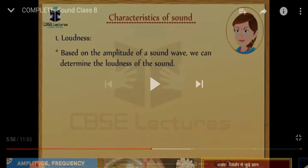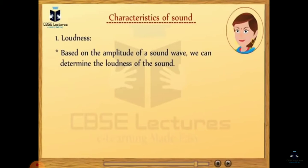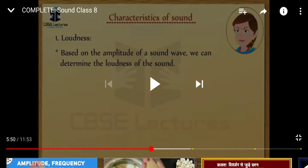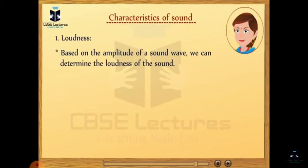When an adult male human being and a child shout at the same note — having the same frequency — the amplitude and loudness of the sound wave from the shouting adult male is larger than that of the child. So loudness depends entirely on the amplitude of the sound wave.